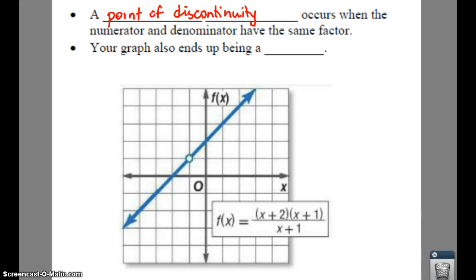This happens whenever your numerator and denominator have the same factor, they cancel, and then you still have a variable or a function on the top.